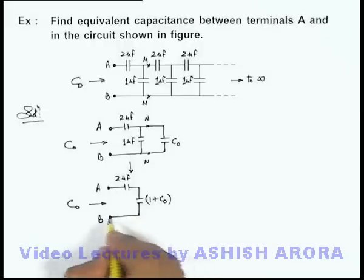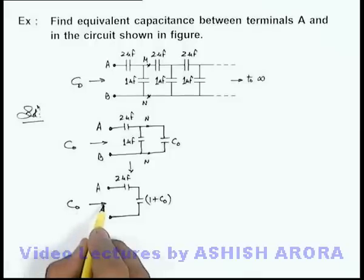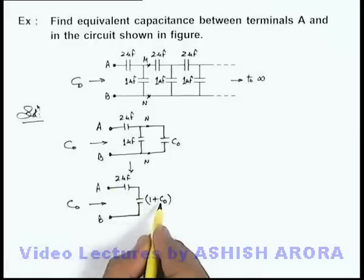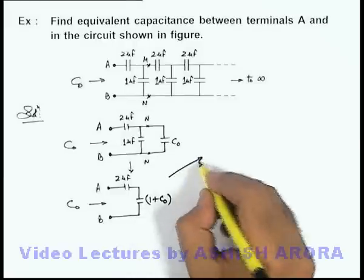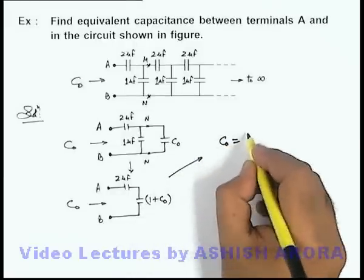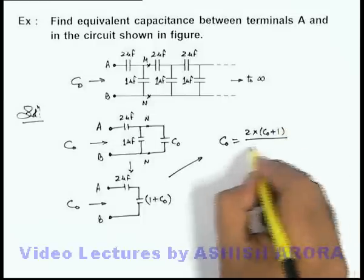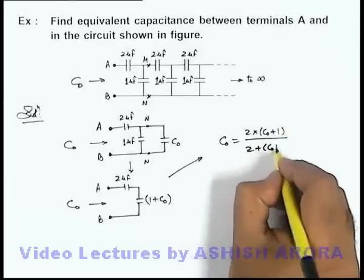So here we can say this C₀ is the equivalent capacitance of series combination of 2 micro farad and 1 plus C₀, so in this situation we can directly write C₀ is equal to 2 multiplied by C₀ plus 1, upon 2 plus C₀ plus 1.